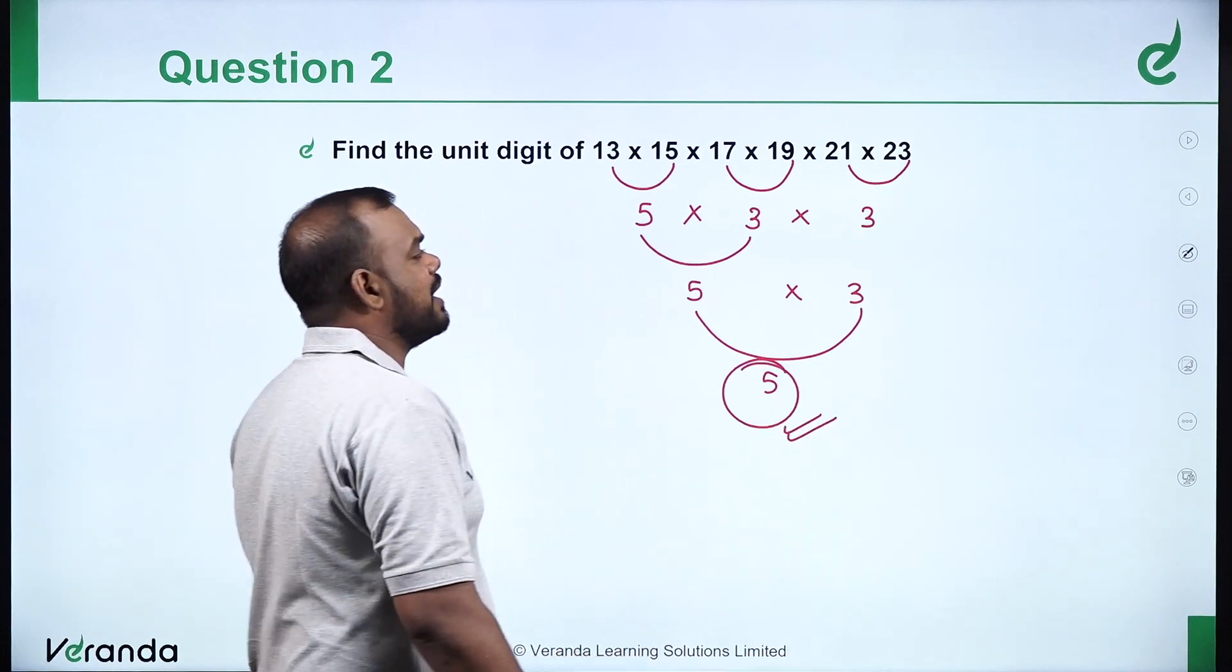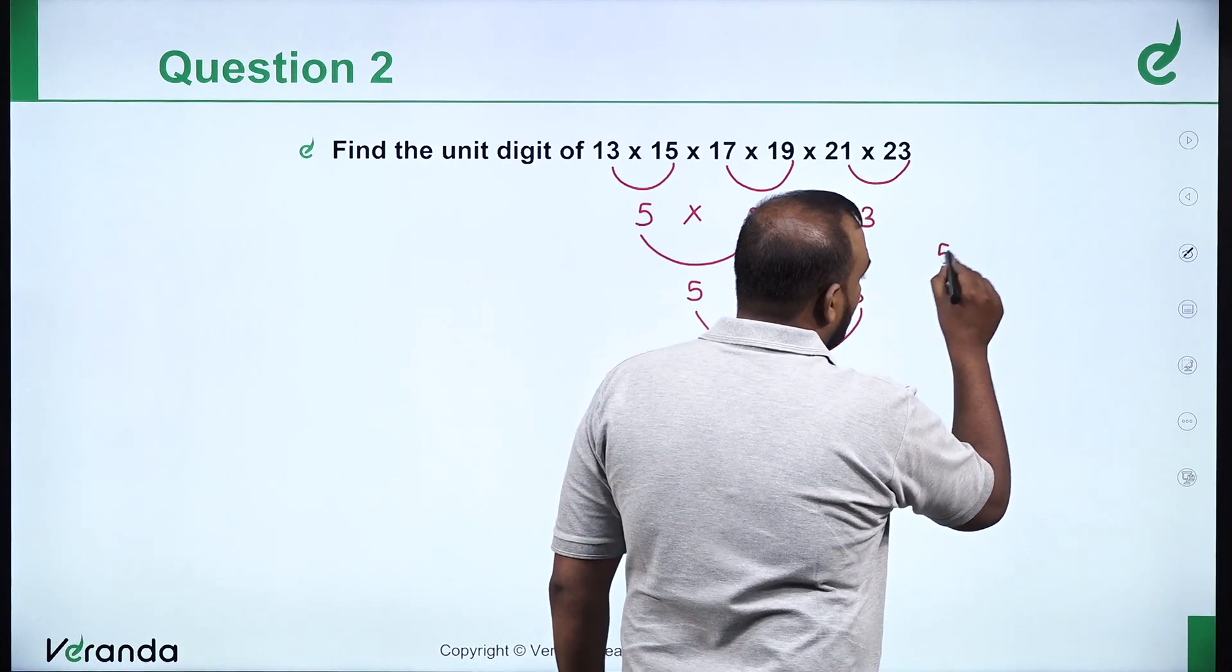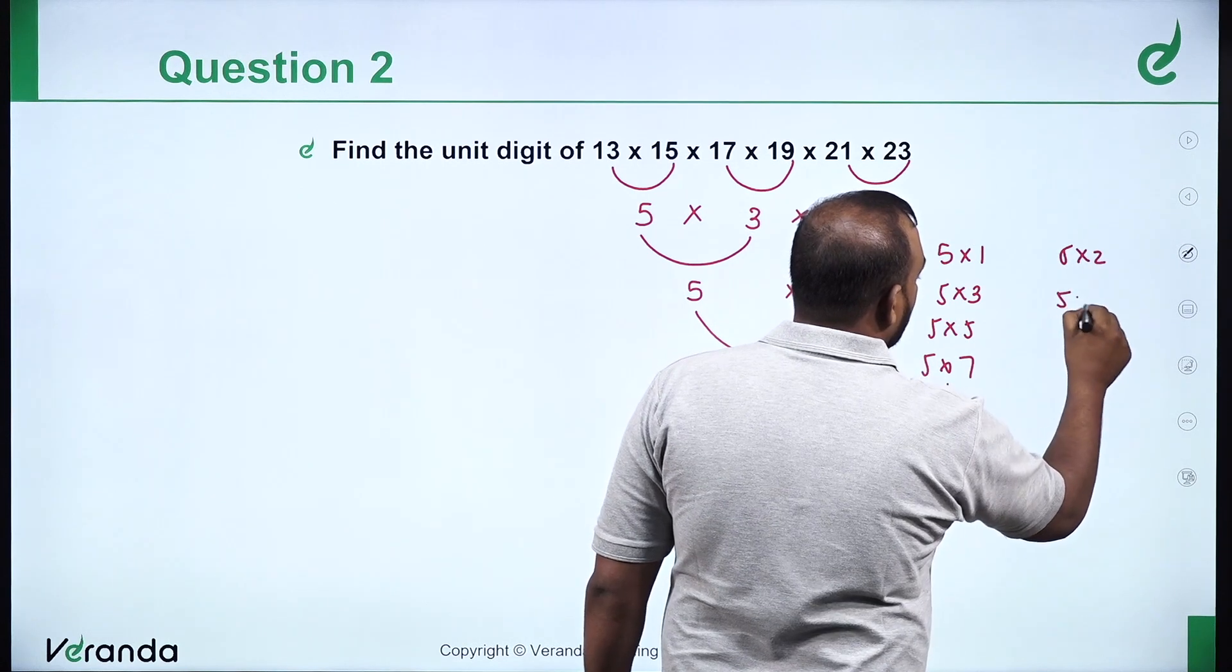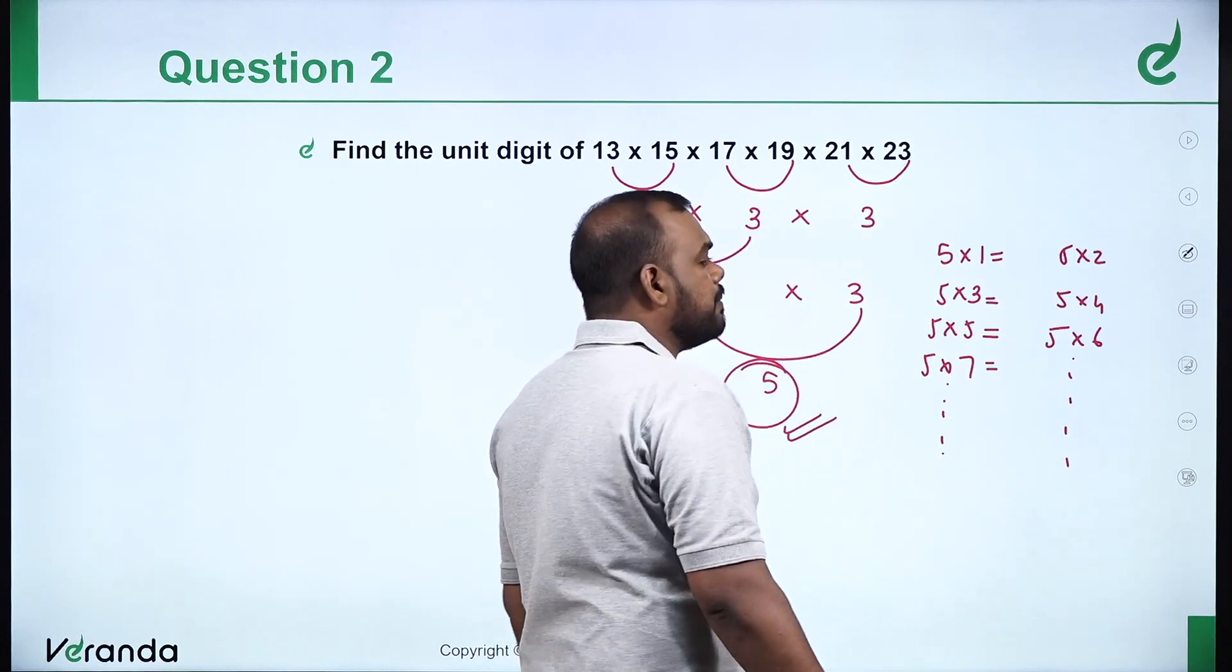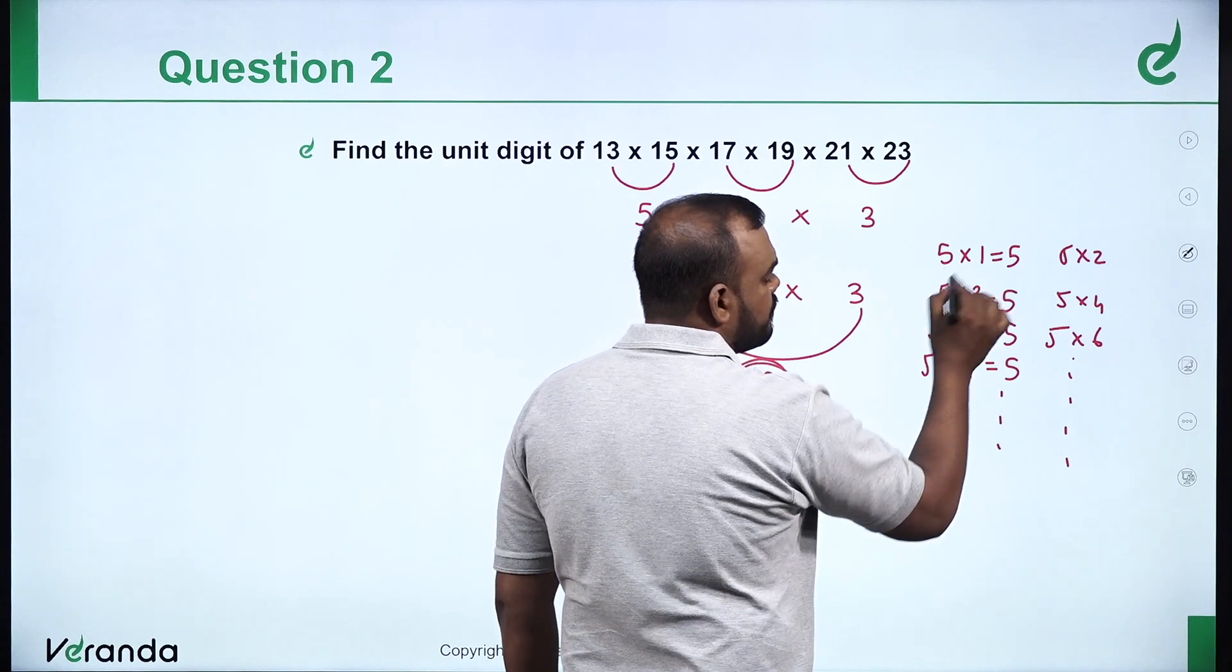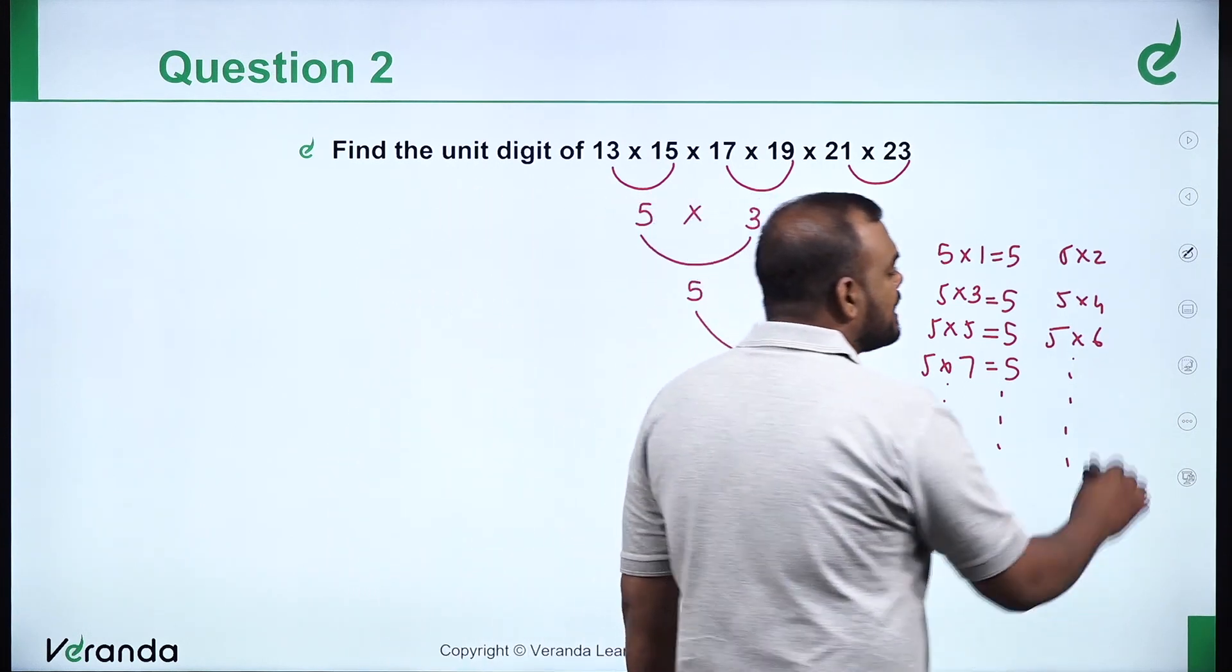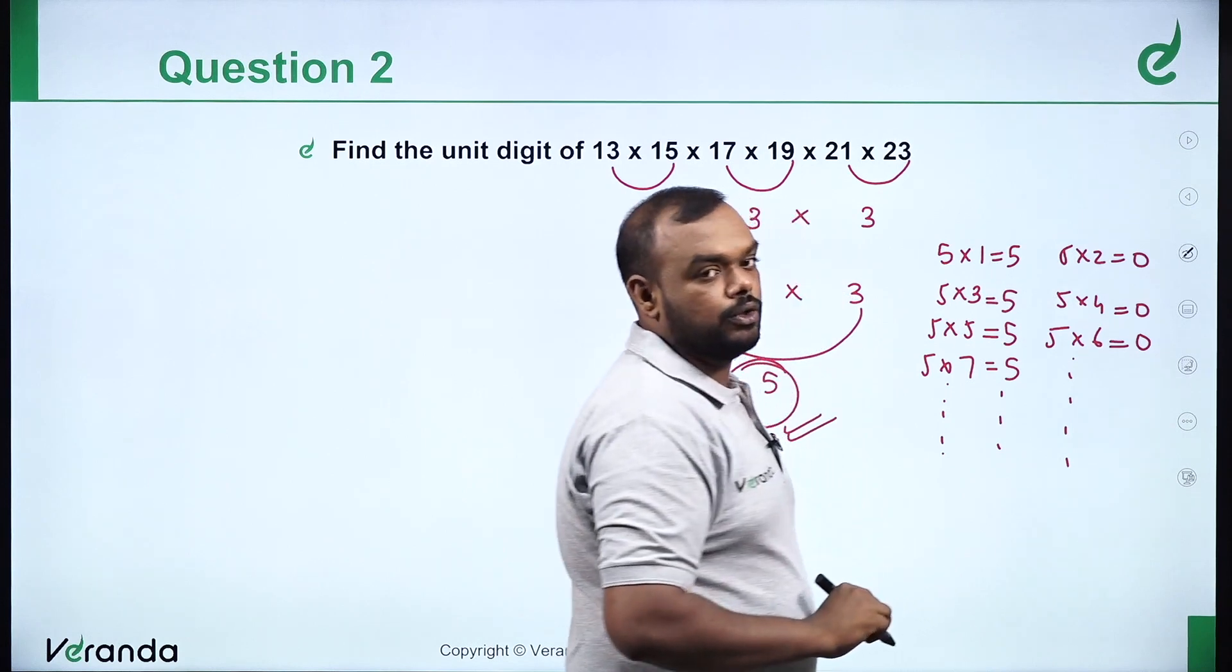I'll call this 5, I'll call this 7. So, 5 into 1, 5 into 3, 5 into 5, and 7. So 5 into 2, 5 into 4, 5 into 6. If you multiply any number with 5, you can multiply that number as an odd number as the output unit digit. 5 into 1 is 5, 5 into 3 is 15 unit digit is 5, 5 into 5 is 25 unit digit is 5, 5 into 7 is 35 unit digit is 5.